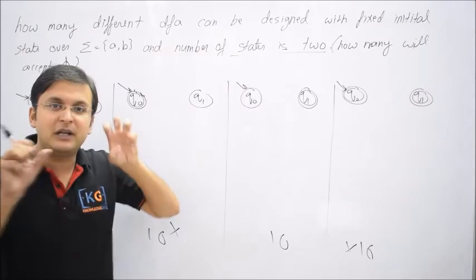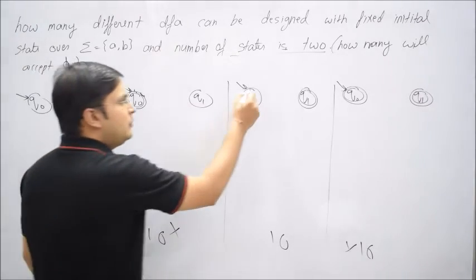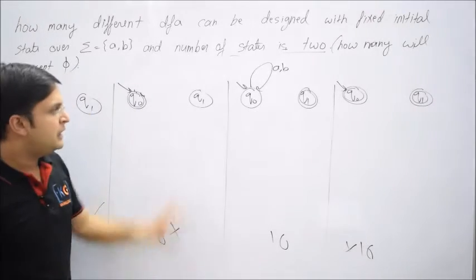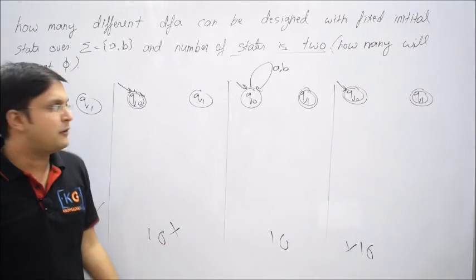If that is the case, we should try something so that no matter what happens you should never go to Q1 because if you go to Q1, the Q1 will accept that logic. So let me have a loop on Q0.